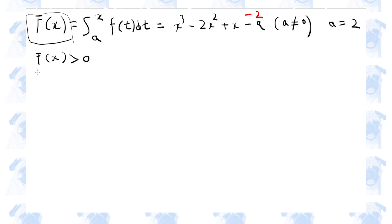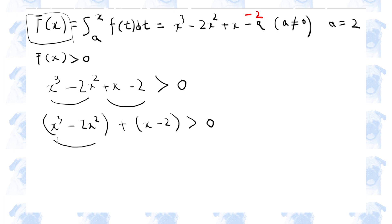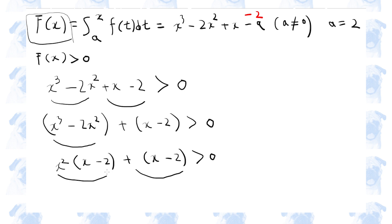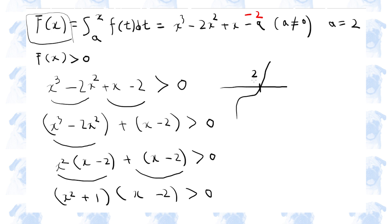So now we know that the antiderivative of f of x is x cubed minus 2x squared plus x minus 2, and this is greater than 0. So let's try and factorize this cubic function. Let's first divide the left-hand side into two parts. In the first part, x squared is the common factor. Since these two parts have x minus 2 in common, we can factorize even further. So the graph of this function shows the root at x equals 2, meaning this function must be greater than 0 when x is greater than 2.